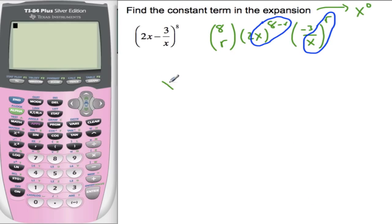So now we have x to the 8 minus r times 1 over x to the r. I'm just ignoring all the other numbers. This is the only piece that matters right now. Equals x to the 0. So that's x to the 8 minus r, times distribute the r. So I have 1 over x to the r, and I'll bring it up, so x to the minus r equals x to the 0. So that's x to the 8 minus 2r equals x to the 0.